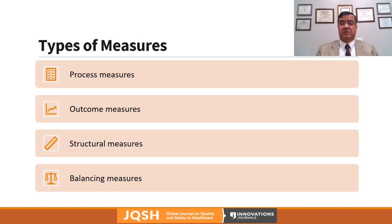There are four types of measures: process measures, outcome measures, structural measures, and balancing measures. I will explain each one of them in the subsequent slides.